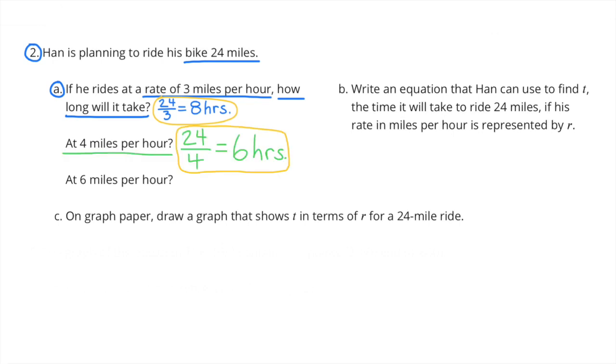How long will it take at 4 miles per hour? 24 miles divided by 4 miles per hour, that will equal 6 hours. It will take Han 6 hours to ride his bike 24 miles if he travels at the constant rate of 4 miles per hour. At 6 miles per hour, 24 miles that he rides his bike, divided by 6 miles per hour, will equal 4 hours. So it will take Han 4 hours to ride his bike 24 miles if he travels at the constant rate of 6 miles per hour.